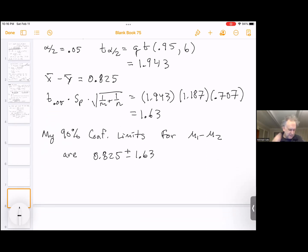0.825 plus and minus 1.63. So 90% of intervals computed this way will contain mu 1 minus mu 2. And let's just also write this like this, just so we can see what this looks like. Because this goes anywhere from negative 0.805 up to positive 2.455.